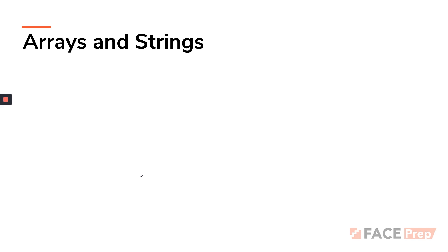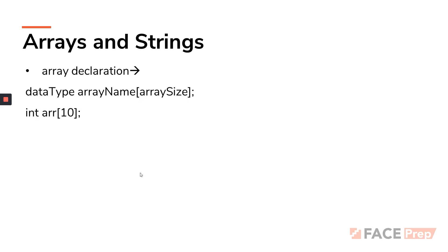So there are three parts. The first part is array declaration. How do you declare an array? You can see on the screen — this is the syntax. First you write the data type of the element you want to store, then the array name (you can write any name), then the size of the array inside square brackets, and a semicolon. For example: integer type stored in an array named ARR with 10 integer elements, followed by a semicolon — which is really important.